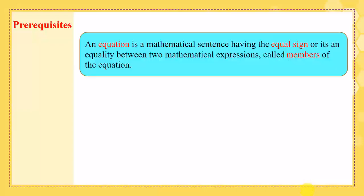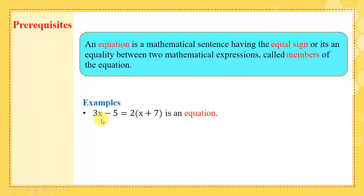Prerequisites. Before we start with this session, we are able to define an equation as a mathematical sentence having the equal sign, or it is an equality between two mathematical expressions, which are called members of the equation. For example, 3x minus 5 equal 2 times x plus 7 is an equation.